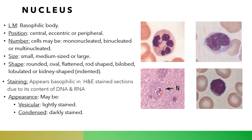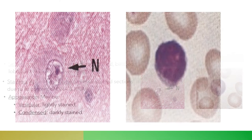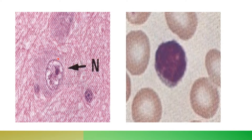This depends upon the activity. If the cell is active and protein-producing, the chromatin will appear extended and pale in color — this is called a vesicular nucleus and the nucleolus will be prominent. If the cell is inactive, the chromatin is coiled and appears darkly stained — this is a condensed nucleus.